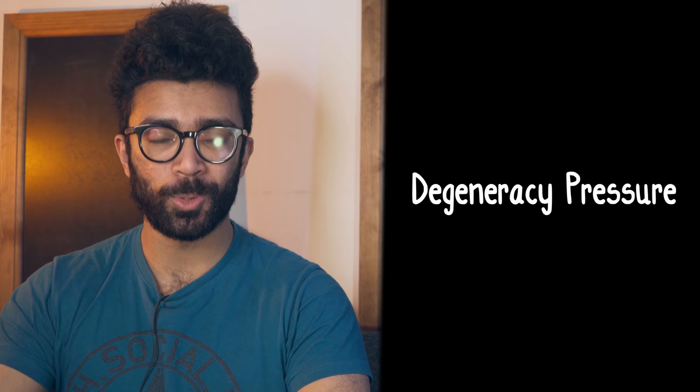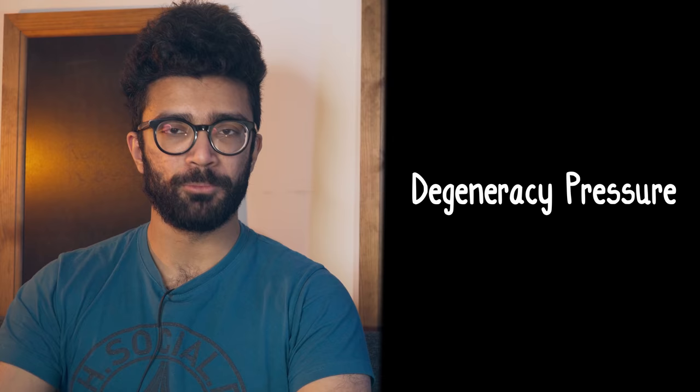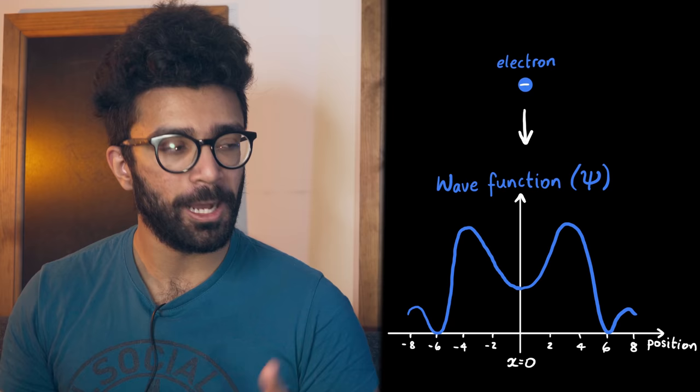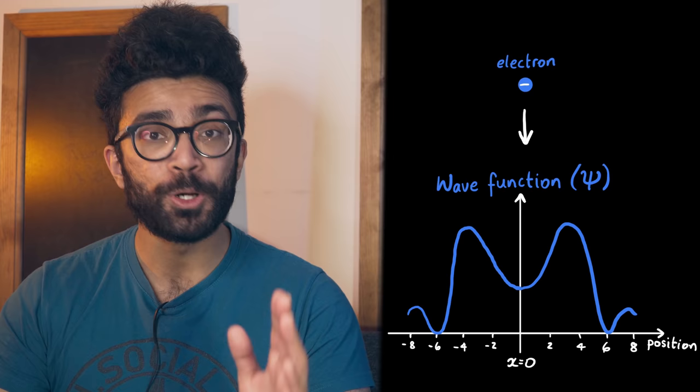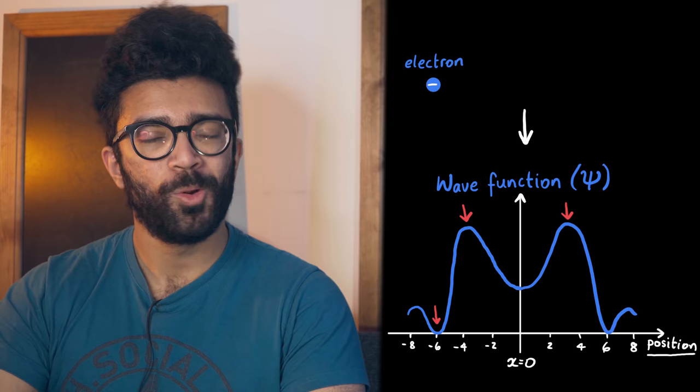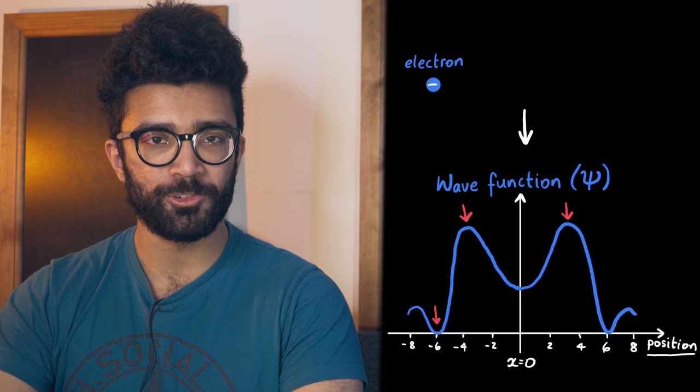But something is stopping the star from collapsing even further, and that something is a quantum mechanical effect called degeneracy pressure. To understand it, let's recall a couple of important ideas in quantum mechanics, starting from the very beginning. Let's recall that any quantum system we happen to be studying, say for example a single electron, can be described by a wave function. This is just a mathematical function that contains all the information we can know about our electron. One such piece of information is the position of our electron in space. The wave function shows, in this case, the electron is most likely to be found in these positions, and less likely to be found here, for example. We won't go into too much detail about this here, but I have a video on wave functions if you'd like to find out more. Check it out up here if you're interested.